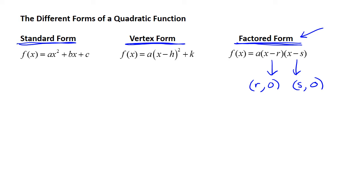So in factored form, you can actually see the x-intercepts show up. But this form, as I said, is not going to come up as often, because not all trinomials are going to factor.